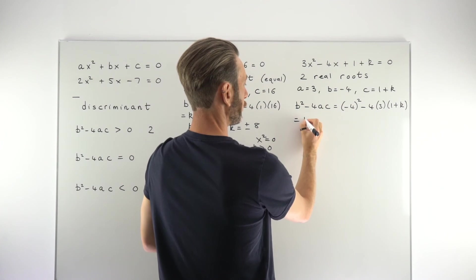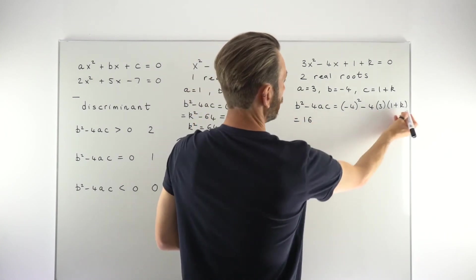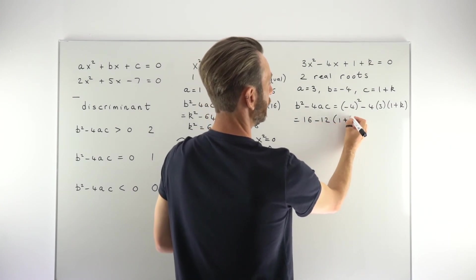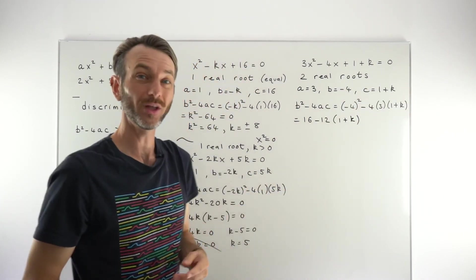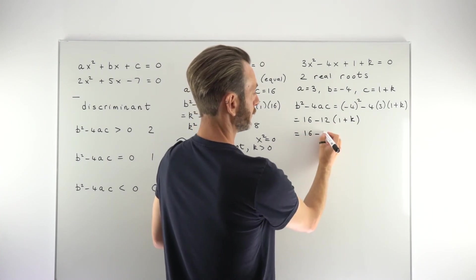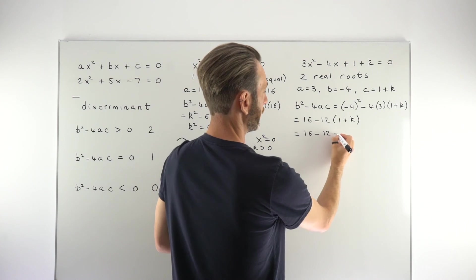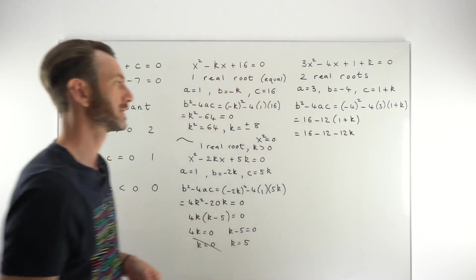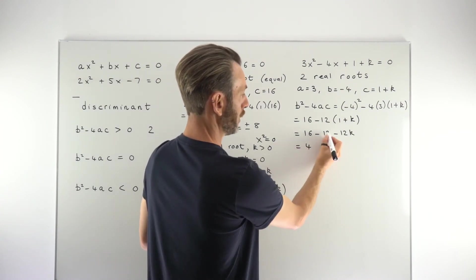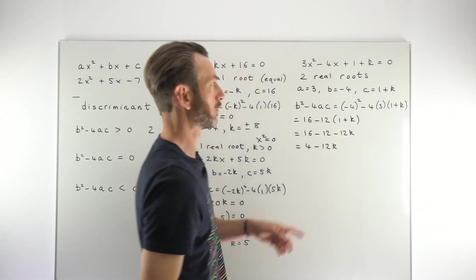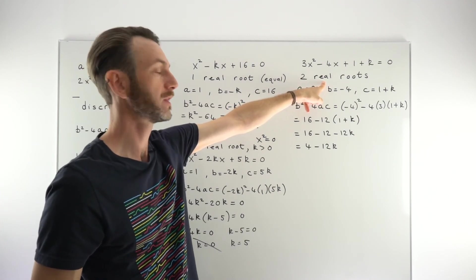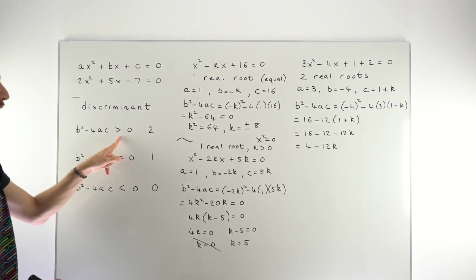Computing the discriminant: b² - 4ac gives (-4)² - 4(3)(1 + k). Two real roots means the discriminant is greater than zero. Working through: (-4)² = 16, and 4×3 = 12, so we have 16 - 12(1 + k). Expanding the bracket: 16 - 12 - 12k = 4 - 12k.